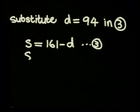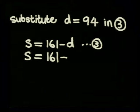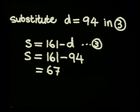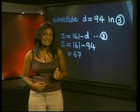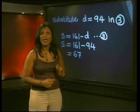We get that S is equal to 161 minus the value of D which is 94 and this simplifies to 67. So what does this mean? 67 passengers paid for a single trip.